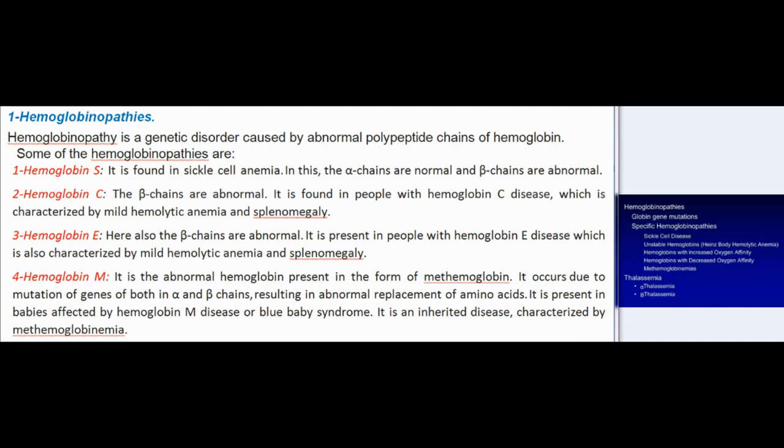Some hemoglobinopathies: (1) Hemoglobin S — found in sickle cell anemia; alpha chains are normal and beta chains are abnormal. (2) Hemoglobin C — beta chains are abnormal; found in hemoglobin C disease, characterized by mild hemolytic anemia and splenomegaly. (3) Hemoglobin E — beta chains are also abnormal; present in hemoglobin E disease, also characterized by mild hemolytic anemia and splenomegaly.